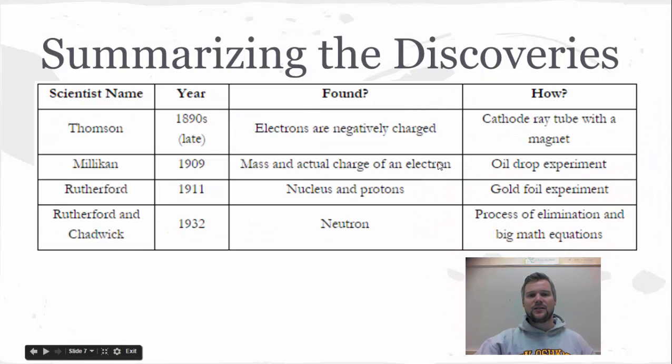And then just to summarize all these discoveries, we have Thomson, Millikan, Rutherford, and Rutherford with Chadwick. Chadwick's the one that's credited. And the order of finding these is kind of based on the fact that Thomson found a charged particle that's on the outside of the atoms, Rutherford found a charged particle that's in the inside of the atom, and then Rutherford with Chadwick found this uncharged particle, so it's pretty hard to find, and that happened last.